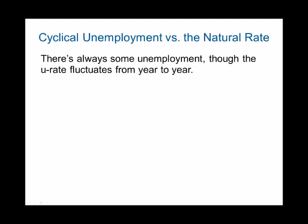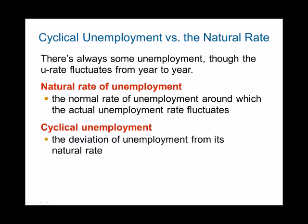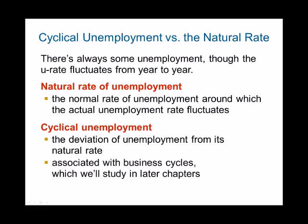There is always some unemployment due to what we call frictional unemployment. The natural rate of unemployment is basically the rate at which the economy performs best. Even if the economy is growing at tremendous speed and is wealthy, there is still some degree of unemployment — that's the natural rate. Cyclical unemployment is any deviation from the natural rate, associated with business cycles.